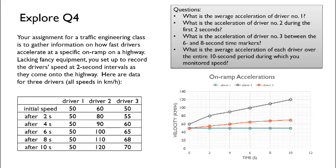What's the acceleration of driver number three between the six and eight-second data points? Driver number three increases from 65 to 68 kilometers per hour over the two-second interval. That's a change of three kilometers per hour for the two seconds or three over two kilometers per hour per second, otherwise known as 1.5 kilometers per hour per second.